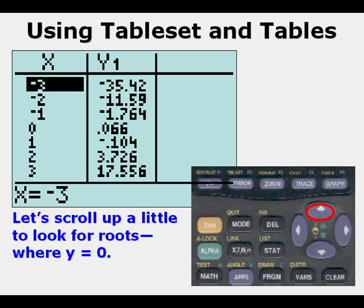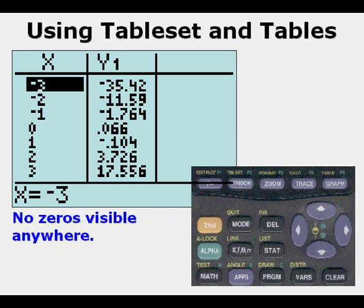We're going to scroll up and we still don't see y values of zero, although at x equals zero that's kind of close. What we're going to do is go back to our table set mode.